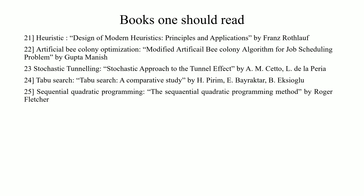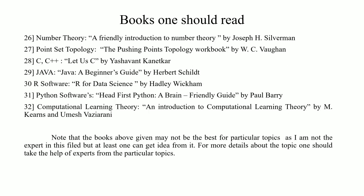All of these books are not sufficient by themselves, but they are the basic requirement for the study of artificial intelligence and machine learning. The maximum topics in the AI and ML syllabus are covered throughout these books. We also have: number theory by Joseph Silverman, point-set topology by Willard, C++ programming, 'Java' by Herbert Schildt, R software by Hadley Wickham, Python by Paul Barry, and 'An Introduction to Computational Learning Theory' by Kearns and Vazirani — the most important one.